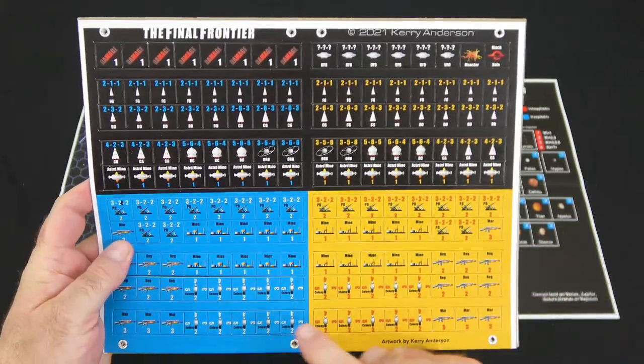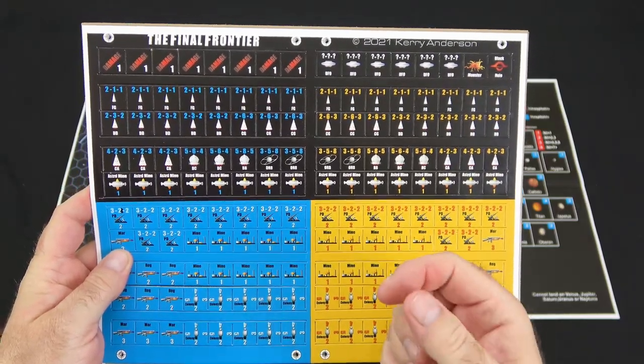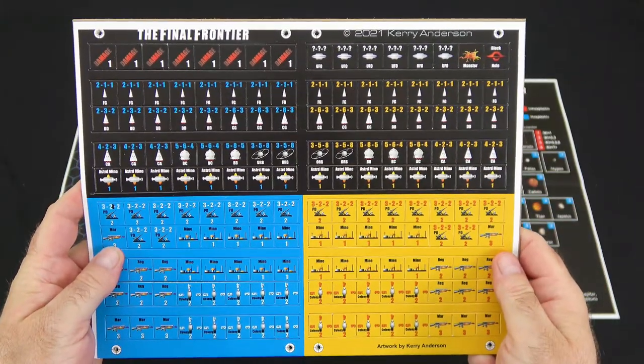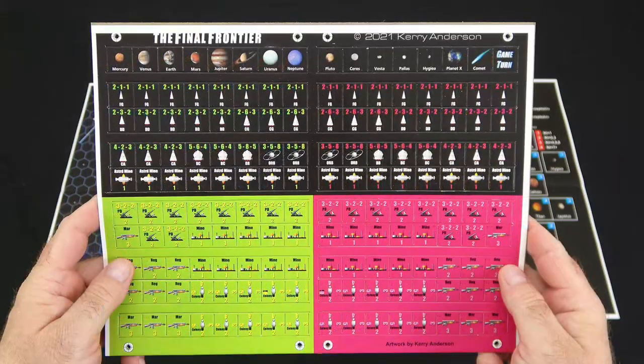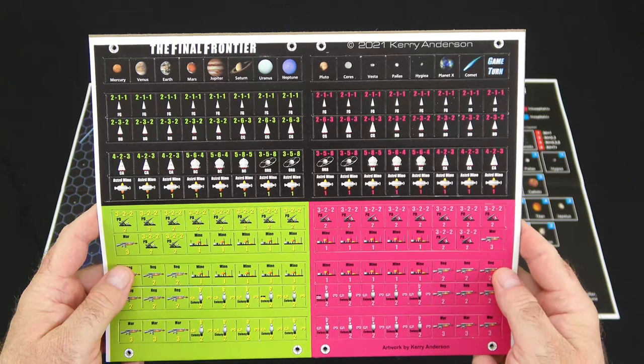And the colonies, if you see, they've got different numbers around it, kind of like a block. And as the colony increases in size, you'll just spin that block around to reflect its growth over time. And on the next sheet, we have the other two factions as well as the planetary counters that you'll be using in the game.